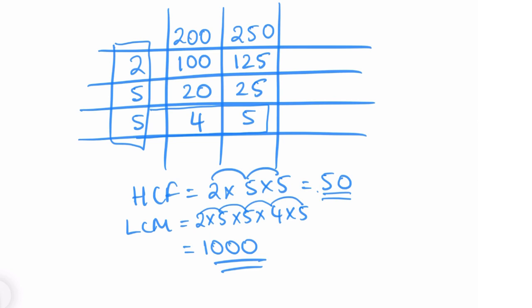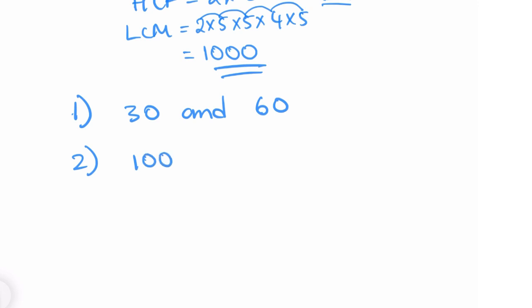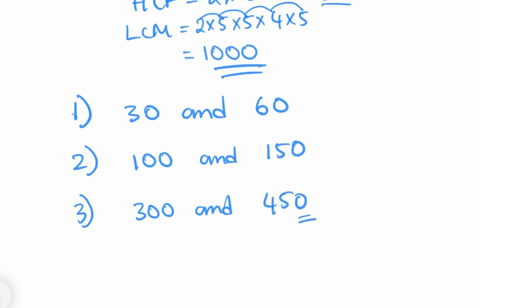The highest common factor of 200 and 250 is 50 and the lowest common multiple is 1000. If you want to try a few more questions: find the HCF and LCM of 30 and 60, then 100 and 150, and 300 and 450. Let me know your answers in the comments. Don't forget to subscribe, give the video a like if it helped, and I'll see you in the next video — Mr. Mahmood helping you do better in maths.